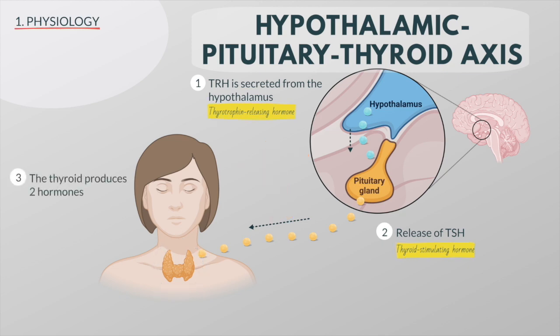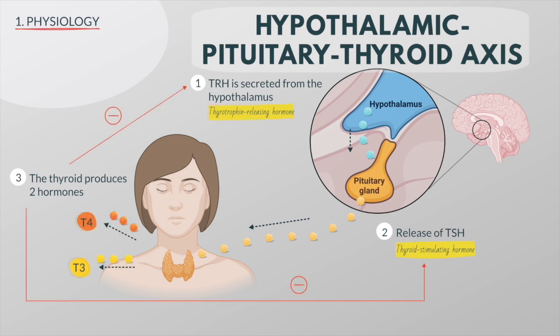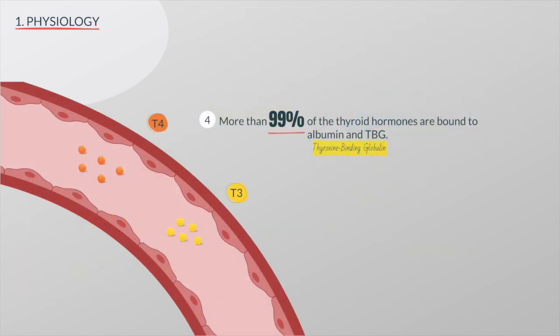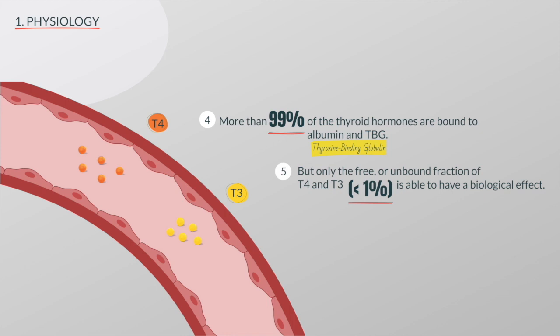The thyroid produces two hormones, T3 and T4. Both TSH and TRH are regulated in a negative feedback loop by circulating T4 and T3. Although T3 is more biologically active than its counterpart T4, the secreted thyroid hormone is 90% T4. Most of the T4 will later be converted to T3. More than 99% of T4 and T3 in the circulation are bound to the proteins albumin and thyroxin-binding globulin, but only the free or unbound fraction of T3 and T4, which is less than 1%, is able to have a biological effect.